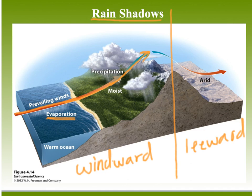When air increases in altitude there is less pressure, so the air expands in volume. When this happens the air cools down dramatically — adiabatic cooling. When this happens the water vapor is able to condense, and that's when we see precipitation come down on this side of the mountain range: the windward side.